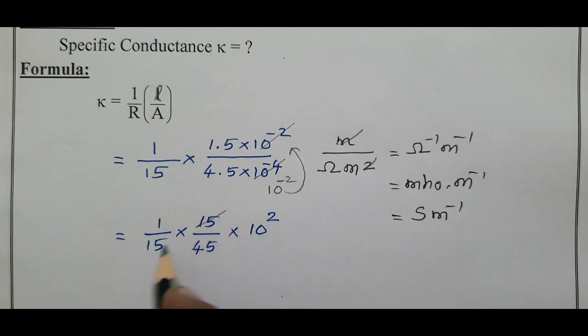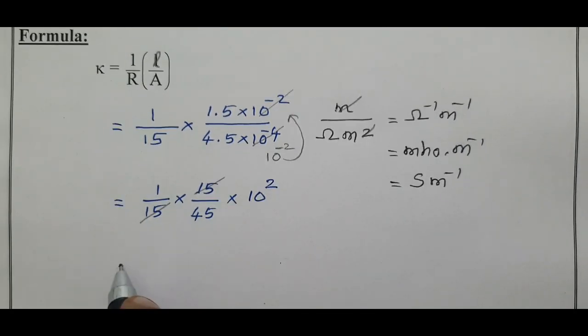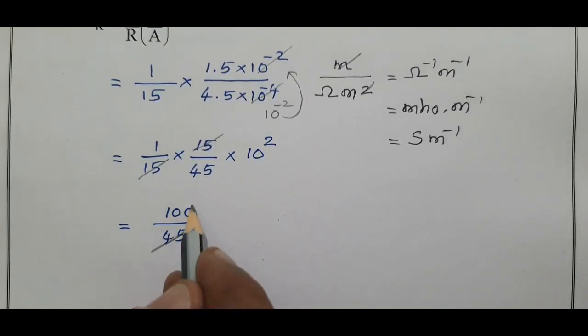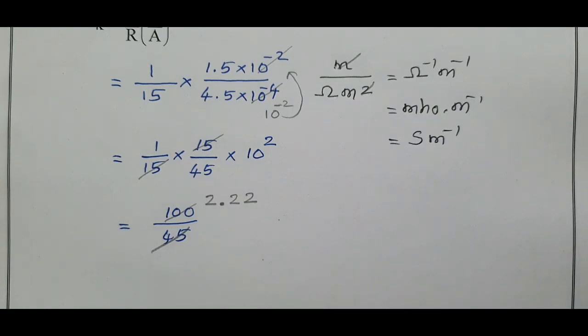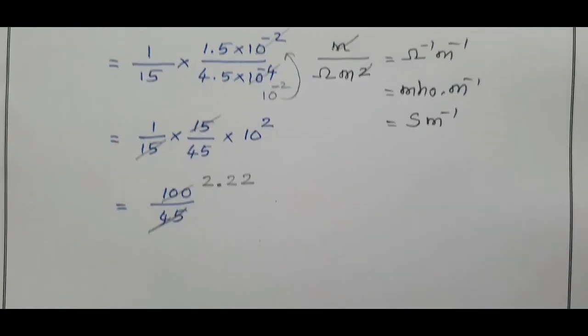1 by 15 is 15. Multiply 1 by 10 power 2, 1 into 10 power 2 equals 100 by 45. 1 by 45 is 45. How many 45's are in 100? 2 times 45's are 90, and it goes on. Unit is Siemen meter power minus 1.